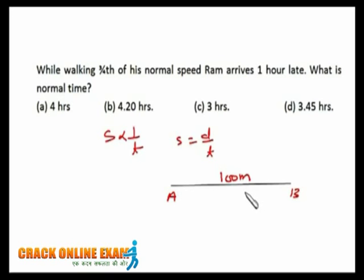Similarly, if he makes his speed half of normal, he'll take double the time. And if his speed is one-third of normal, he'll take three times the normal time.